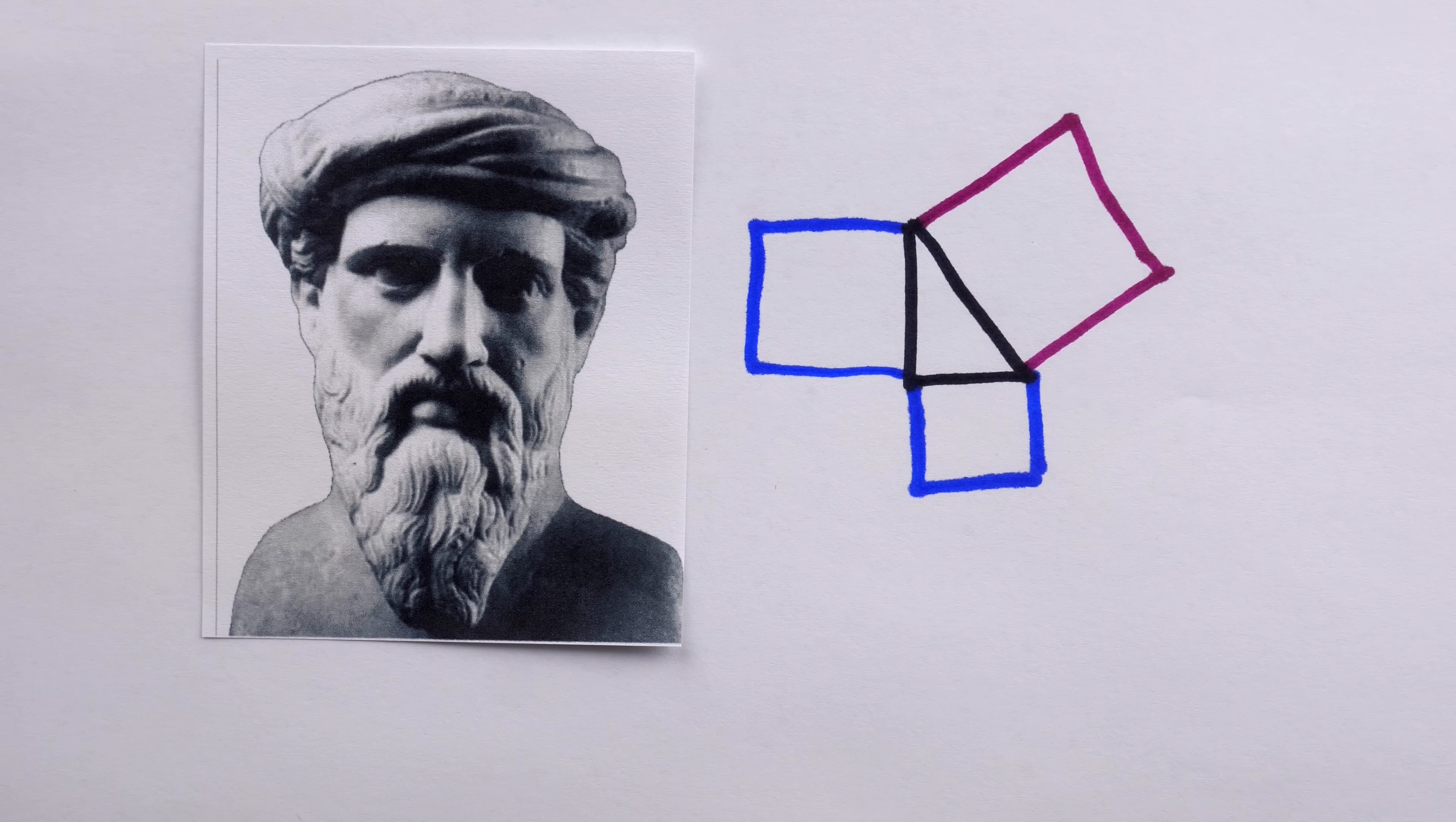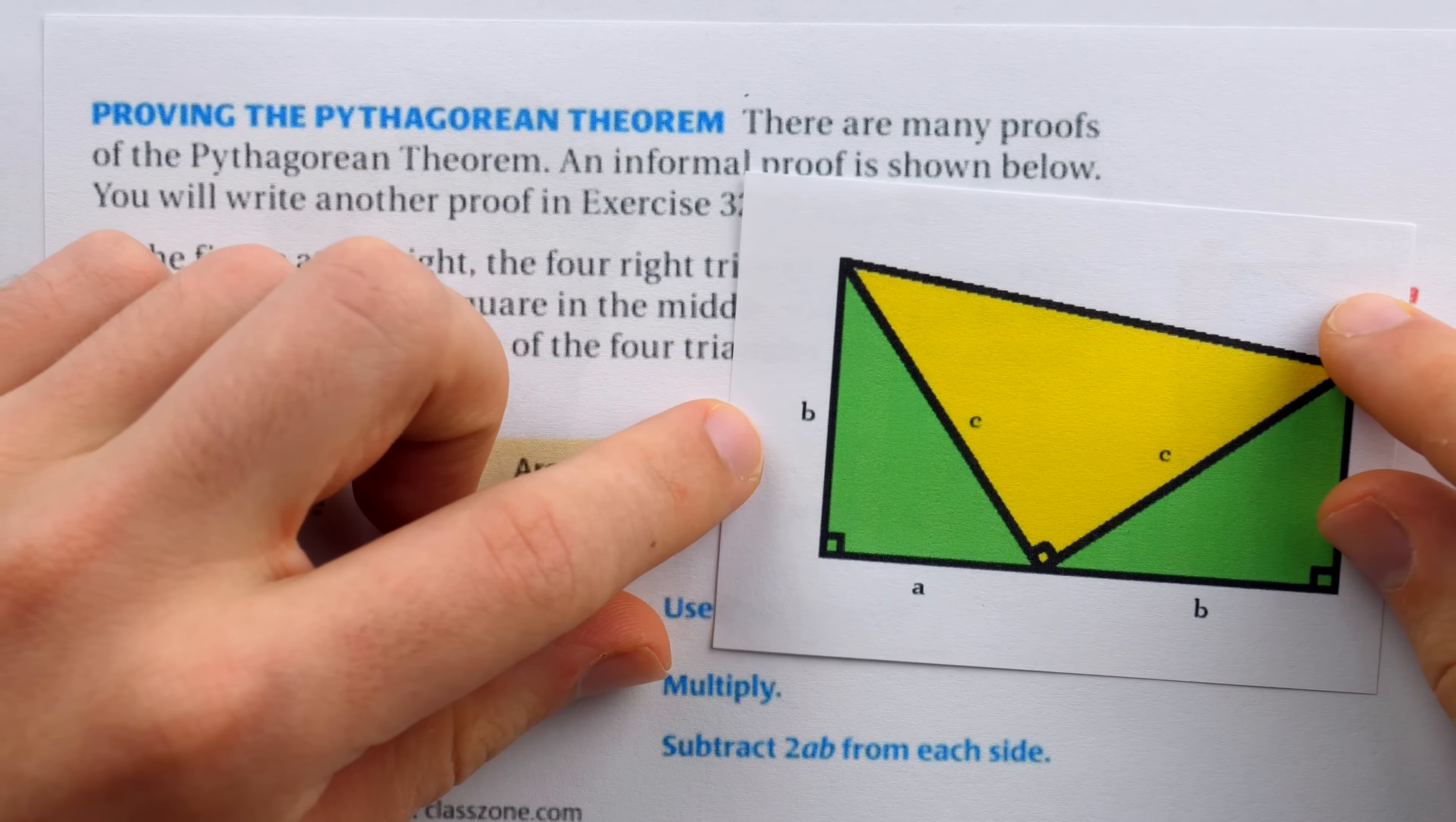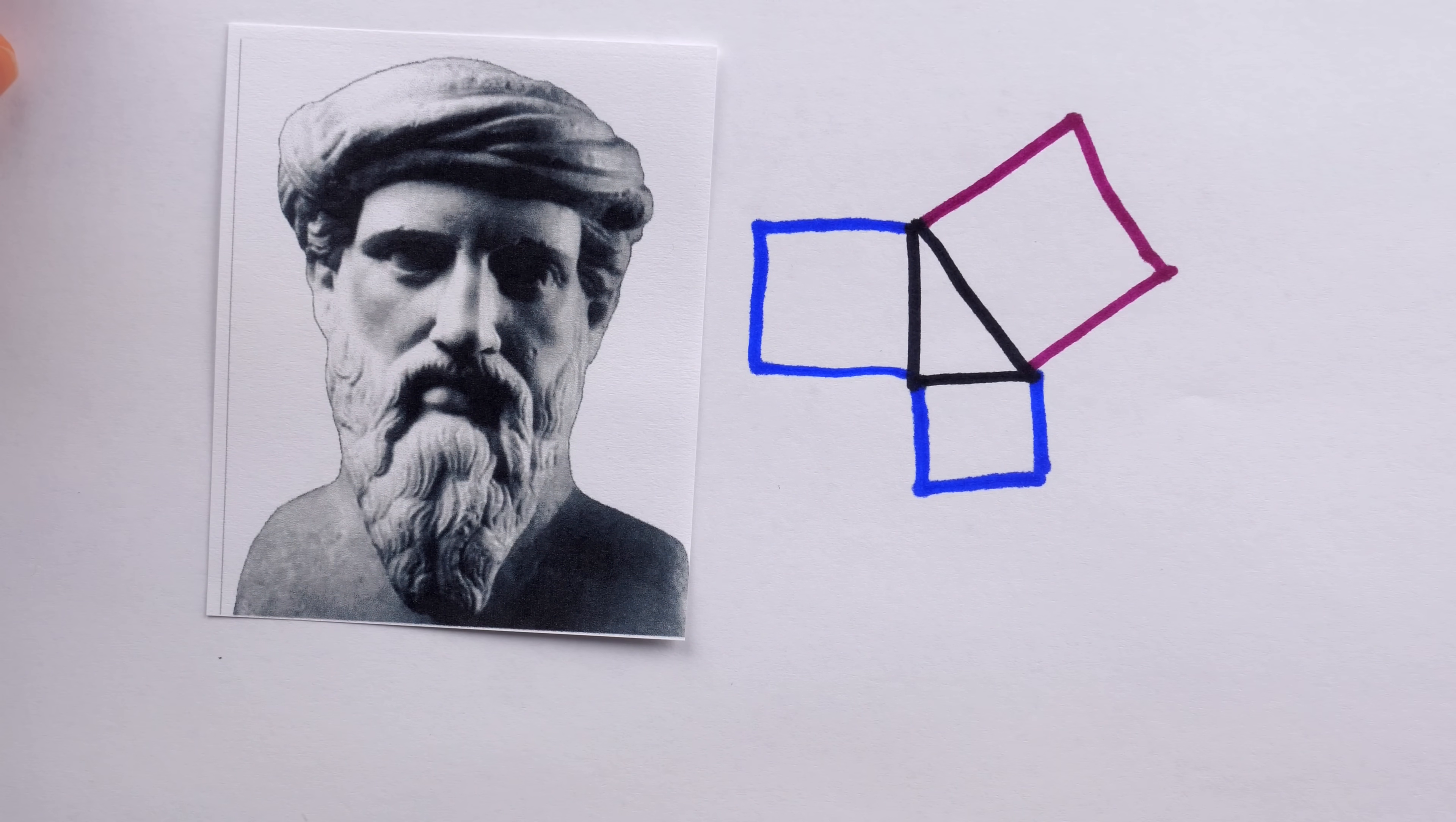Indeed, some other simpler proofs you might have learned include this one, which is like a more algebraic version of what's sometimes called the Chinese proof of the theorem. And, of course, the classic proof using a trapezoid, which was provided by U.S. President James Garfield. But in my opinion, neither of these are the simplest Pythagorean theorem proof. Let me show you that one.